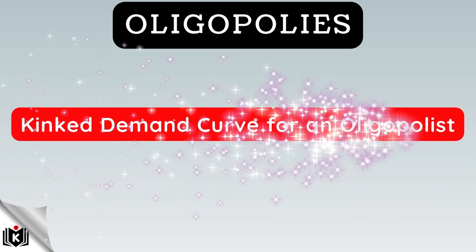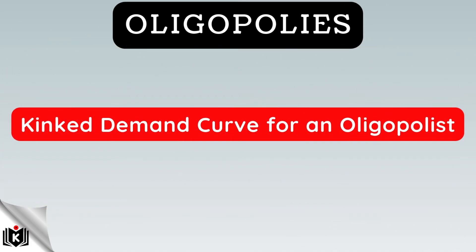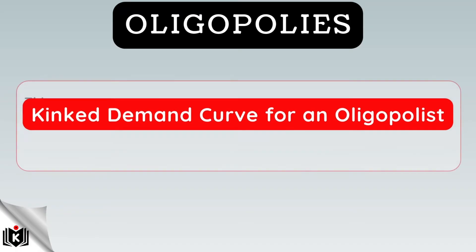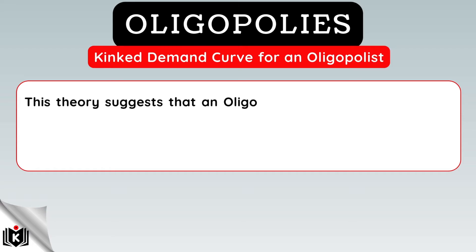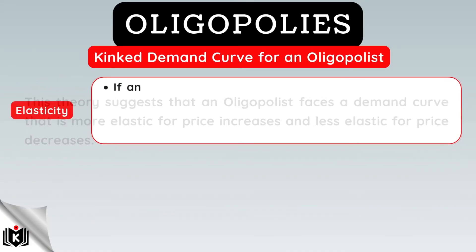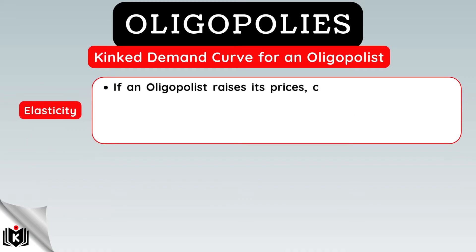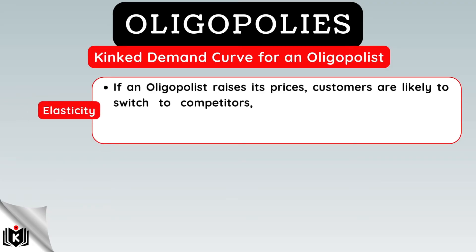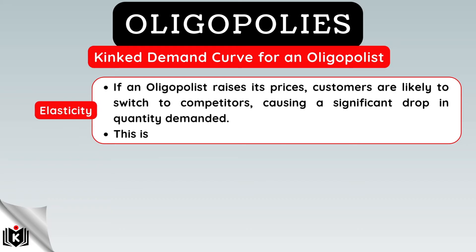One interesting aspect of oligopolies is the kinked demand curve theory. This theory suggests that an oligopolist faces a demand curve that is more elastic for price increases and less elastic for price decreases. If an oligopolist raises its prices, customers are likely to switch to competitors, causing a significant drop in quantity demanded. This is referred to as an elastic response.